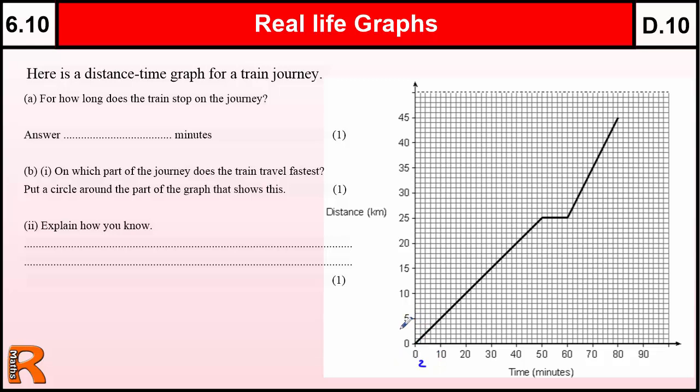Going up this way it's different, we've got five squares is five, so each square in this direction is one kilometre.